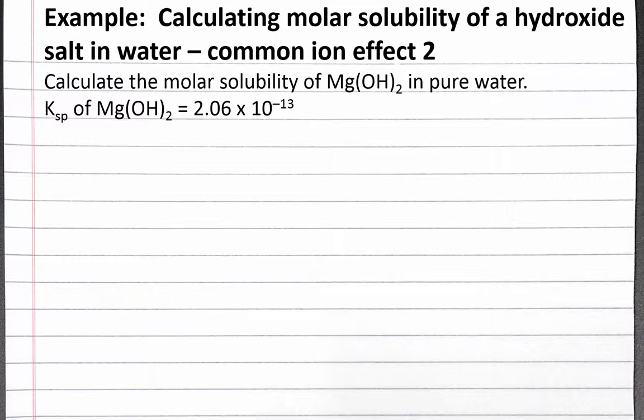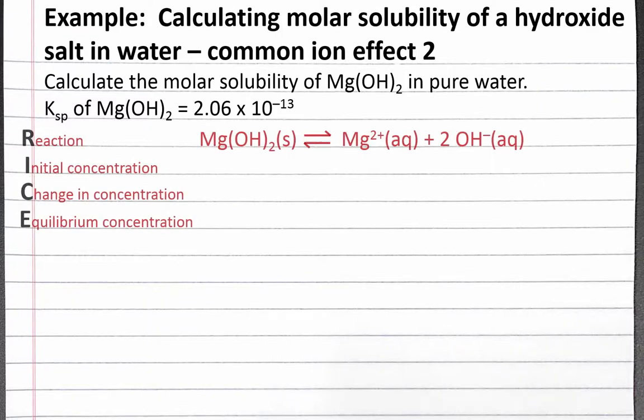The solubility product constant of magnesium hydroxide is 2.06 times 10 to the negative 13. We'll start by creating a RICE table for the dissolution of solid magnesium hydroxide in water. When one formula unit of magnesium hydroxide dissolves in water, it produces one magnesium ion and two hydroxide ions.